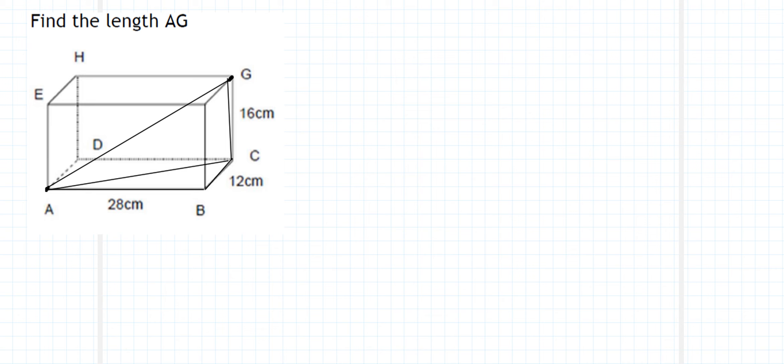And so the first triangle we're going to be doing is triangle A, B and C. And if we were to draw that out as a triangle, we would end up with a triangle with sides A, B and C. And we can put on the length that we know. We know the distance between A and B is 28 centimeters. And we know the distance between B and C is 12 centimeters. So from there, we can work out length AC.